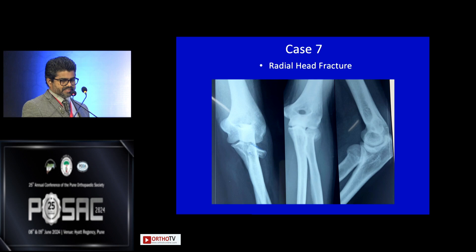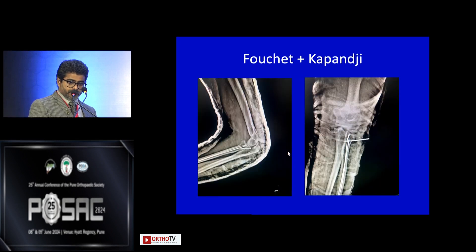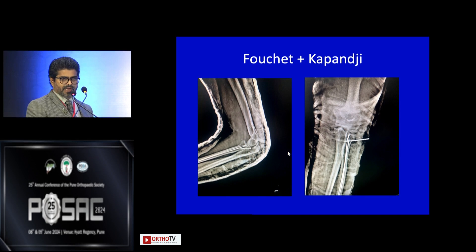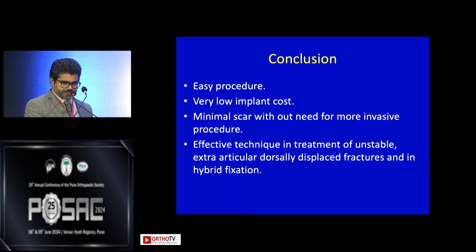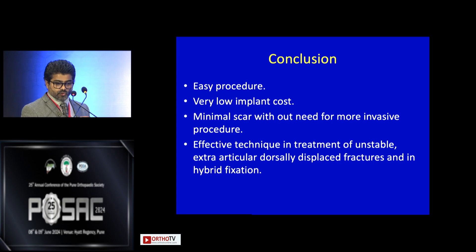Case seven: a displaced, angulated radial head fracture. We used two techniques — Kapanji and Fuchia. With the Kapanji technique we reduced the fragment, and then from the radial styloid we passed two K-wires as a Fuchia fixation. In conclusion, this is an easy procedure with very low implant cost, minimal scarring, and without the need for more invasive procedures.